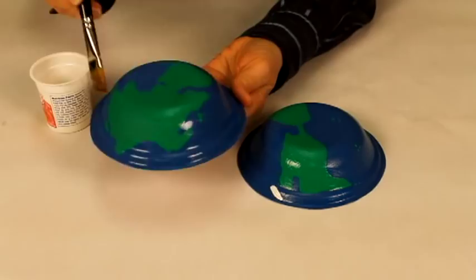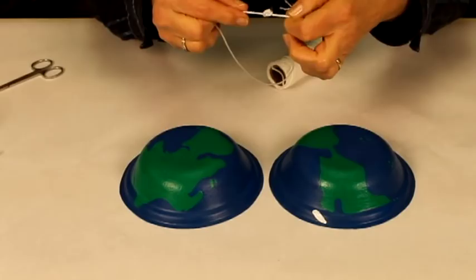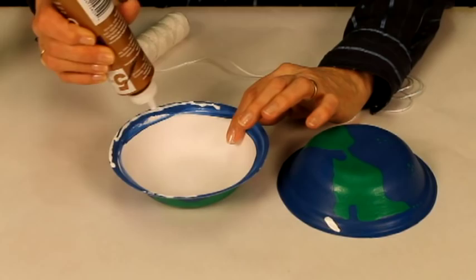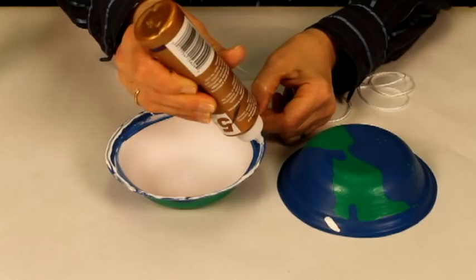Take a string and tie a double knot on one end. Put some white glue on the edge of one of the balls. Slide the knot of the string in the ball. Glue the other ball on top of the first one to form the Earth. Be careful to align the continents on each side properly and then let dry.